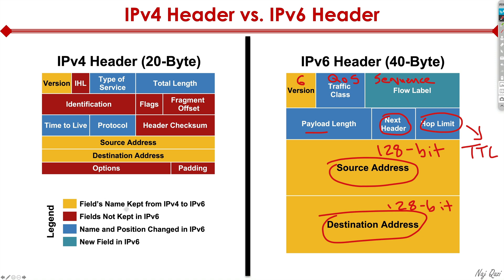To the left, the legend here shows all the fields that have actually been removed or pulled from IPv6 to make the header more streamlined.